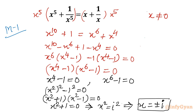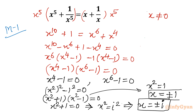And from the second factor x square minus 1 equal to 0, so x square equals 1, giving x equal to plus minus 1. So from the first equation x power 4 minus 1 equal to 0, there are four solutions: two are real (plus minus 1) and two are imaginary (plus minus i).